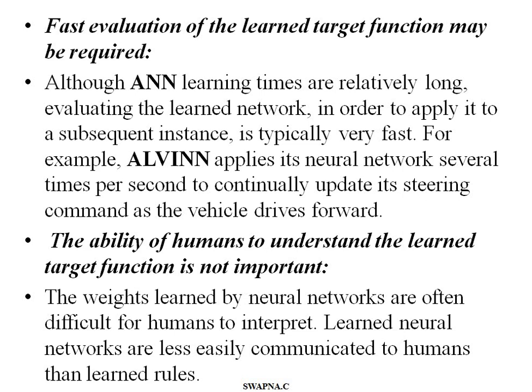Sixth characteristic: the ability of humans to understand the learned target function is not important. Weights learned by neural networks are often very difficult for humans to understand. Artificial neural networks calculate and adjust the weights themselves according to the environment and the target function, and these learned networks are less easily communicated to humans.